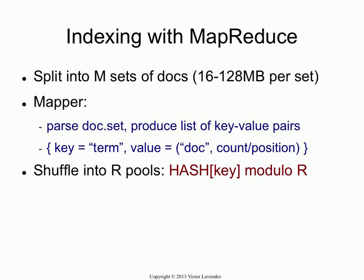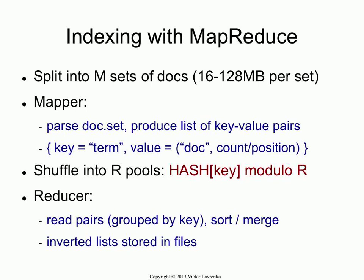What happens afterwards? The shuffle step — which you don't implement, this is implemented by MapReduce itself — takes the keys. In our case, the keys are individual terms. So you can imagine the word 'he' and all the tuples that came from the word 'he' in this particular batch. The architecture takes the keys, hashes them to create an integer, and does a modulo r operation, grouping them into r sets. r is the number of reducers you're going to have, and one reducer gets only one group as input.